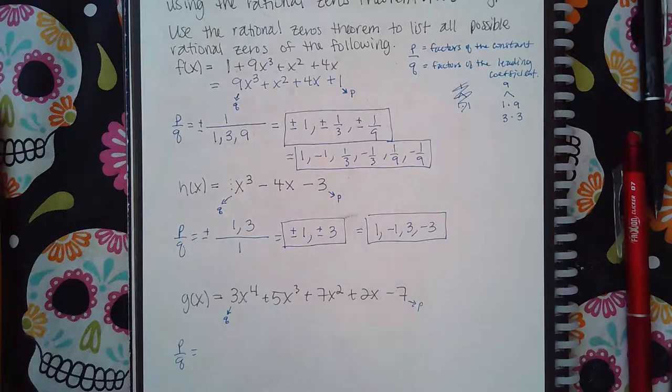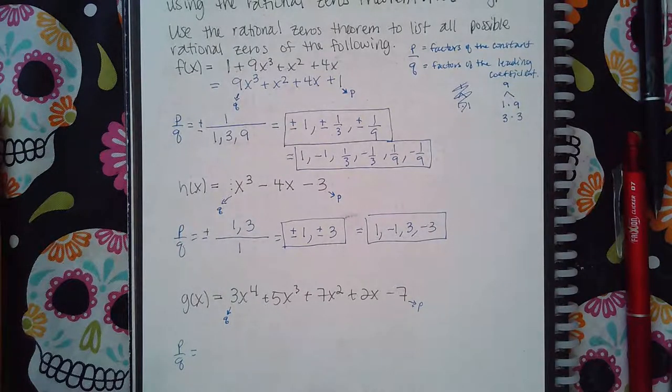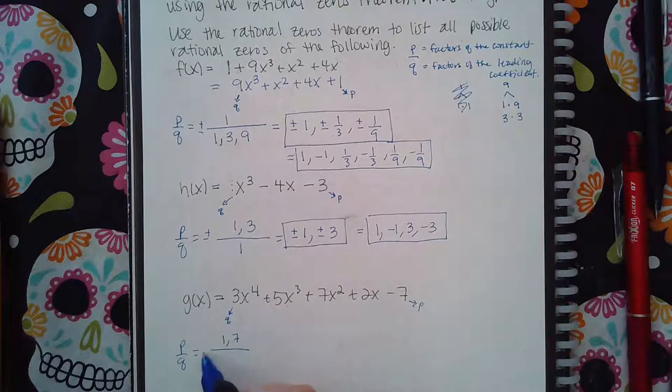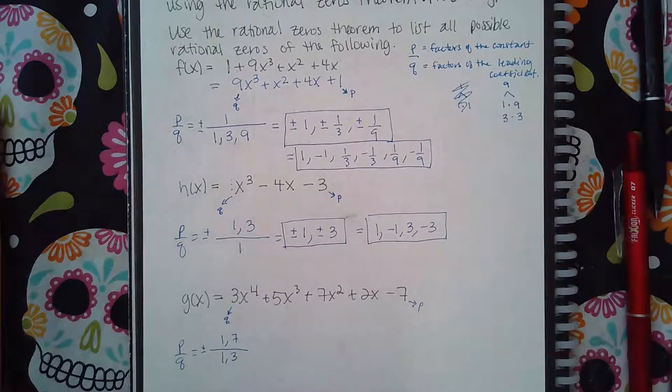And when we do P over Q, we're going to have the factors of 7, which are 1 and 7, and then the factors of 3, which are 1 and 3.